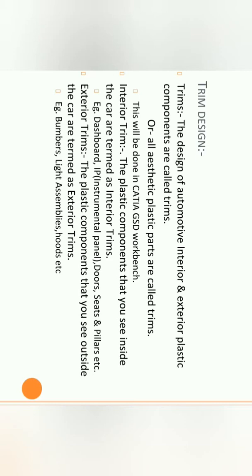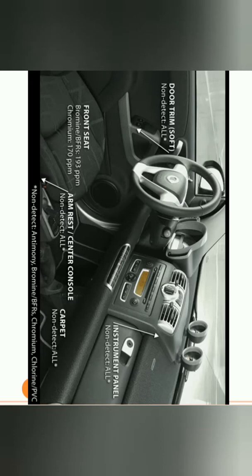Similarly, exterior trims are defined as the plastic components you see outside your vehicle or car: bumpers, taillights, headlight assemblies, hoods, front grills, etc. Those are examples of exterior trim. While designing trim, there are different types: hard trim design and soft trim design. According to hard and soft trim classification, there are different designing standards and calculations as per company specifications.